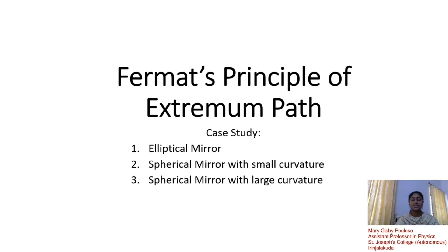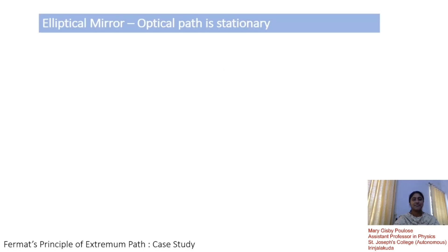Here we discuss three cases: the elliptical mirror, a spherical mirror having curvature greater than that of an elliptical mirror, and a spherical mirror having curvature smaller than that of an elliptical mirror. First, the elliptical mirror. In this case, the optical path is always stationary.